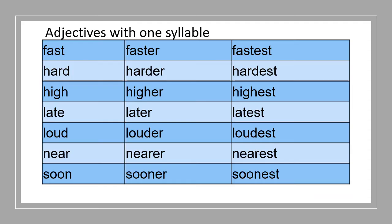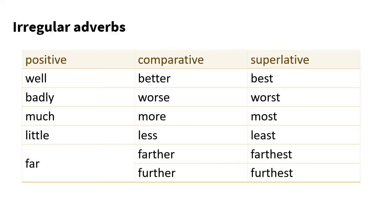The second type of adverbs have one syllable. As we said with adjectives, fast, faster, the fastest. Faster than, the fastest. Hard, harder than, the hardest. High, higher than, the highest. Soon, sooner than, the soonest. And the third type is what is called irregular adverbs.